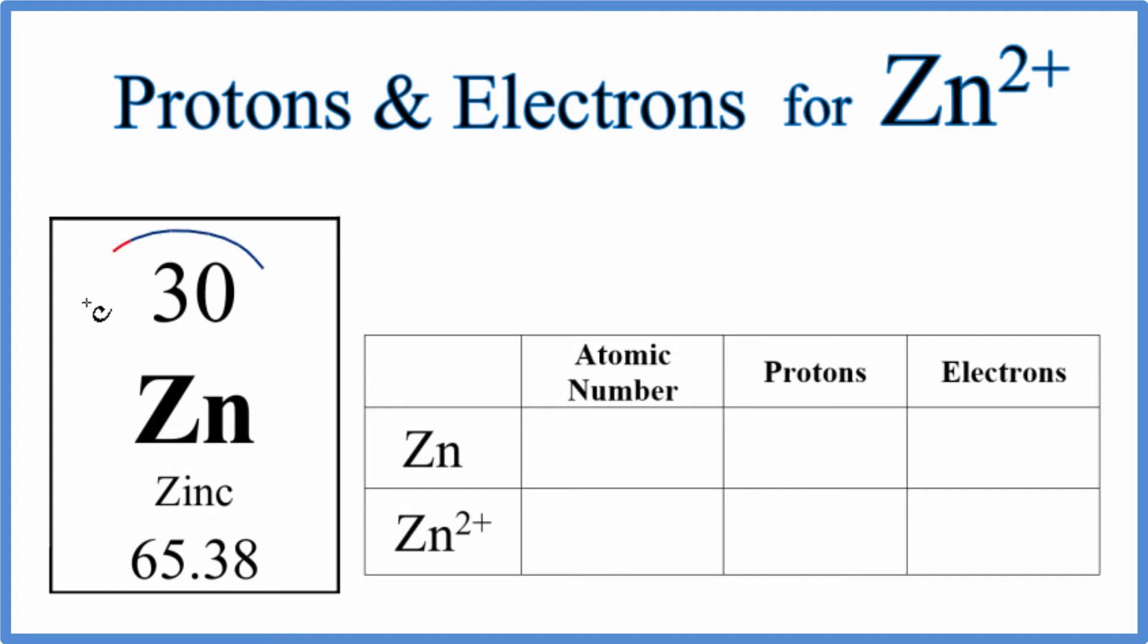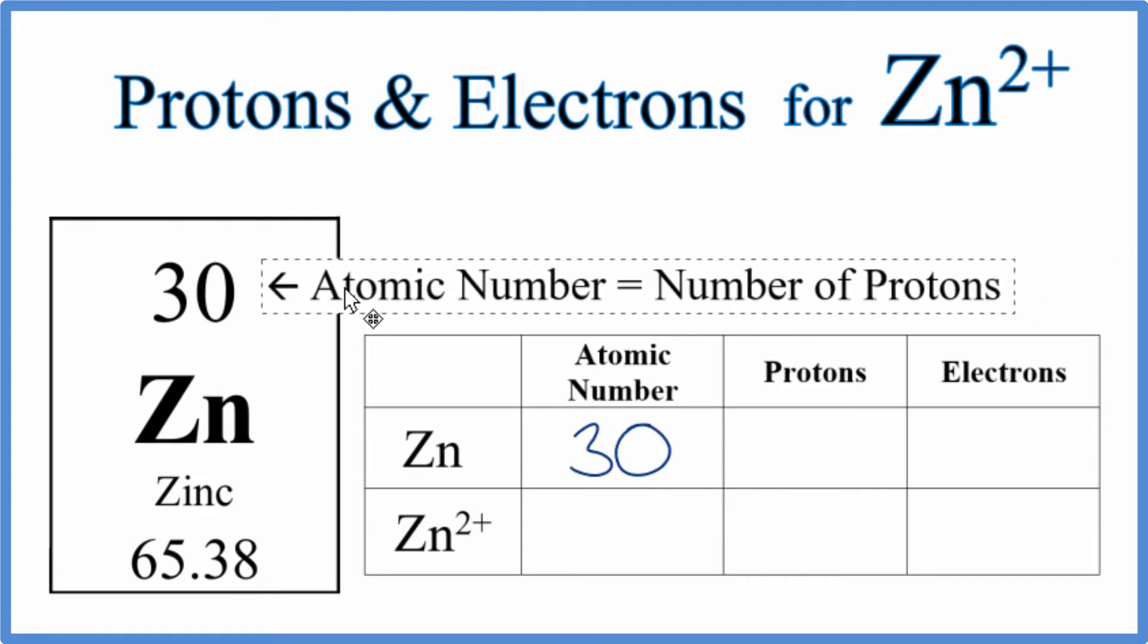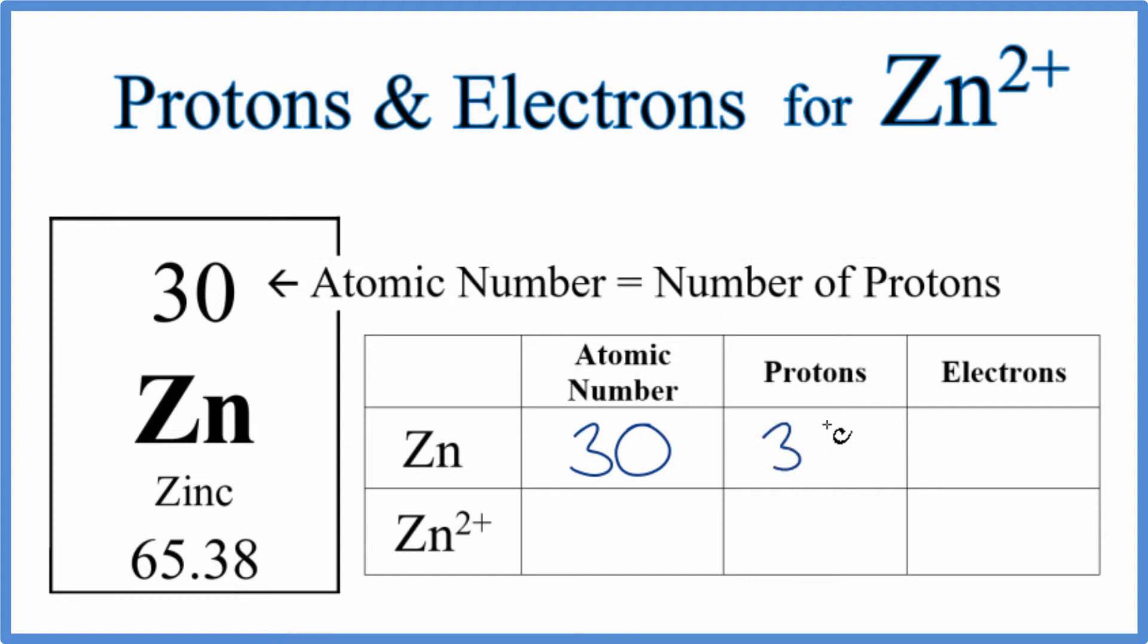We can also see we have an atomic number. This number right here is the atomic number of 30. The atomic number is the number of protons, so we put 30 here for the protons for zinc.